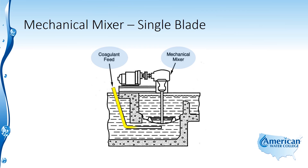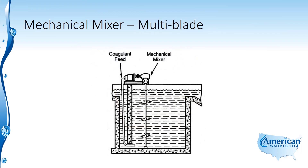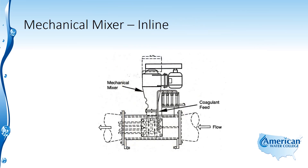The coagulant is fed right at the point of mixing so it becomes homogeneously mixed and coagulation can take place. Another type is the multi-blade mechanical mixer, which operates on the same principle but with multiple blades, providing more vigorous mixing. Thorough mixing is very important — inadequate flash mixing will result in poor coagulation and flocculation. The mechanical inline mixer uses the same components but is installed directly in the pipeline, adding coagulant right at the point of mixing.